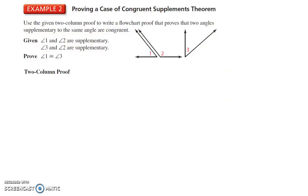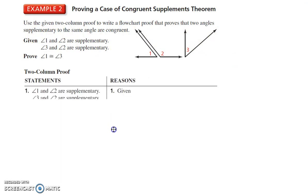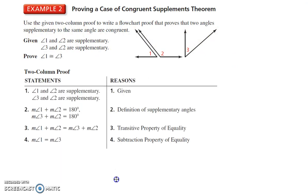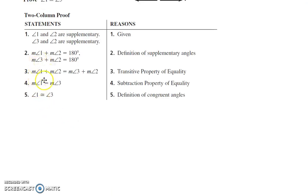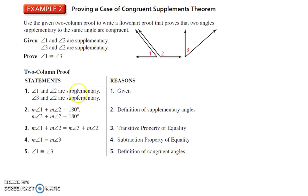We want to use a two-column proof and transfer it into a flowchart proof that proves that two angles are supplementary. Here's our two-column proof. We want to take this given two-column proof and just transfer it into a flowchart proof. We'll take each part, put a bubble around it, write what's given underneath, and label it.